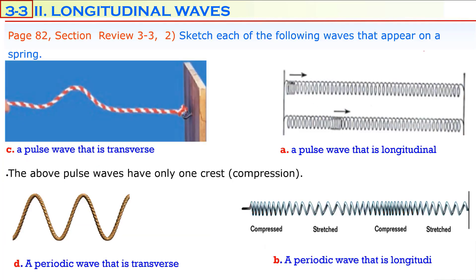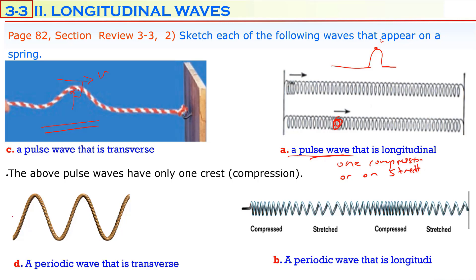Sketch each of the following waves on a spring. A pulse wave that is transverse has direction of motion and direction of vibration perpendicular to each other. A pulse wave that is longitudinal can be just one compression or one single stretch. A periodic wave that is transverse must contain several crests and troughs. A periodic wave that is longitudinal must contain several compressed and stretched regions one after another — compressed, stretched, compressed, stretched, and so on.